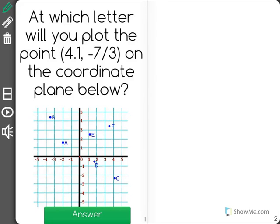At which letter will you plot the point 4.1, negative 7 thirds on the coordinate plane below?